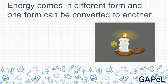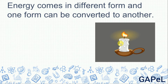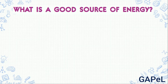So one energy gets converted into another form of energy. We can save energy — energy is not destroyed, it is converted. We can use energy efficiently. Next topic: what is a good source of energy?